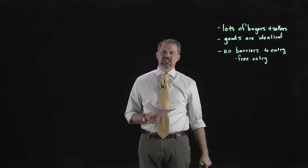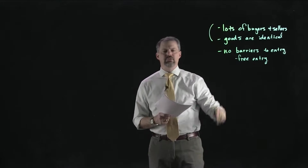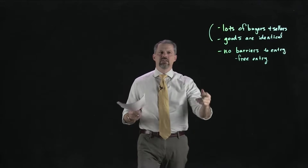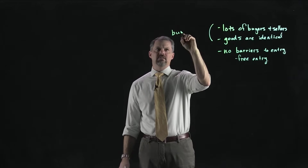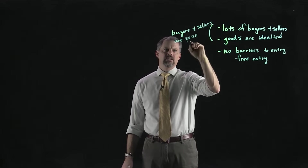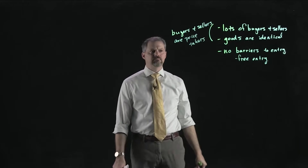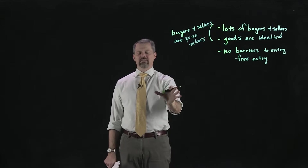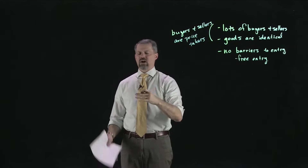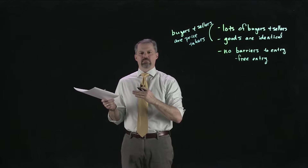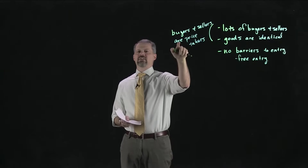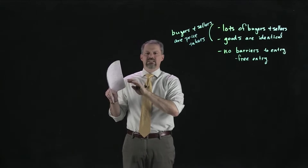If we think about what these first two characteristics together imply — lots of buyers and sellers and identical goods — then both the buyers and the sellers are price takers. That means they take prices as given. That does not mean that price never changes; the price will change if demand or supply changes, shifting the intersection of the demand and supply curve. What we're saying is that buyers and sellers just take that price as given — it's not under their control.